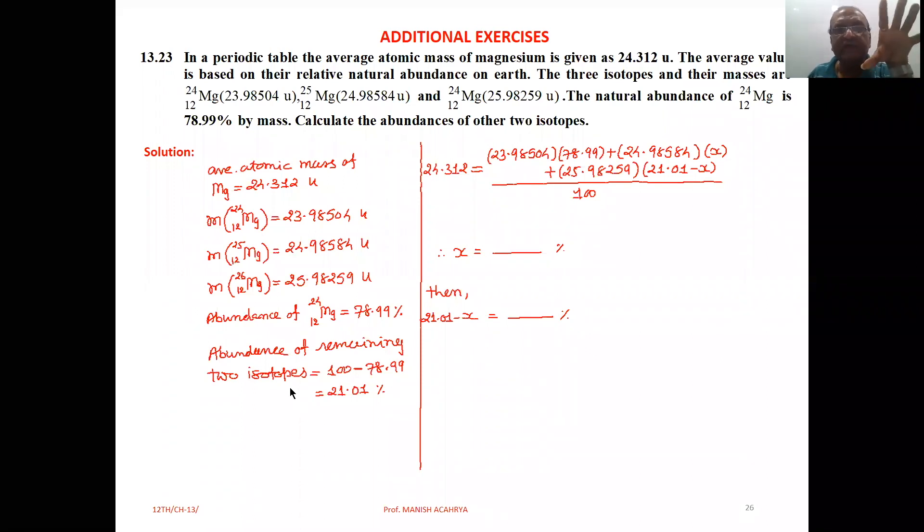see, total we take 100% out of which 78.99% is 12mg24, so 100 minus 78.99% equals 21.01%, which is the rest abundance of other two isotopes. So,